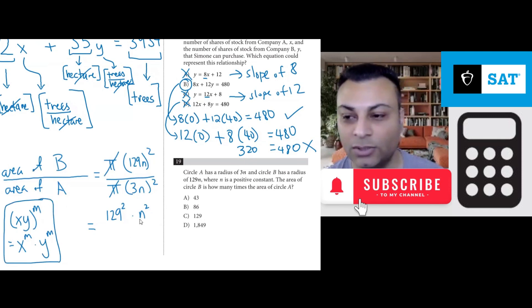So that's the numerator, 129 squared times n squared over 3 squared times n squared. n squared divided by n squared is 1. So we have just this,